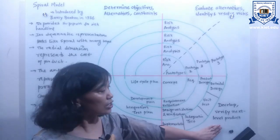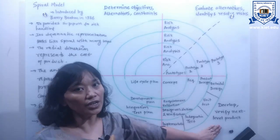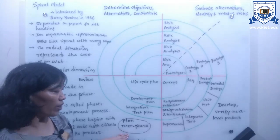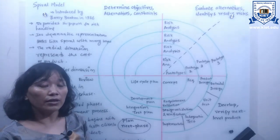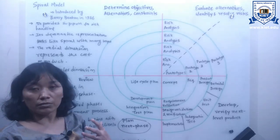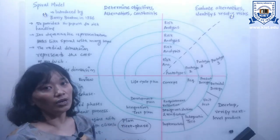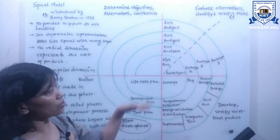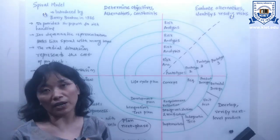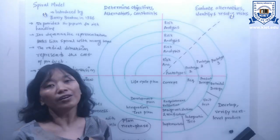In the third quadrant, the identified features are developed and verified for testing. In the fourth quadrant, the client evaluates the developed versions of the software and then plans for the next phase. One of the important features of the spiral model is that it provides support for risk handling.